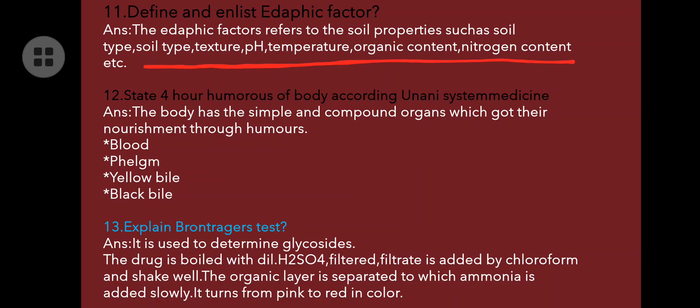Right for humours of body: according to the Unani system, the body has simple and compound organs which get their nourishment through humours like blood, phlegm, yellow bile, and black bile.